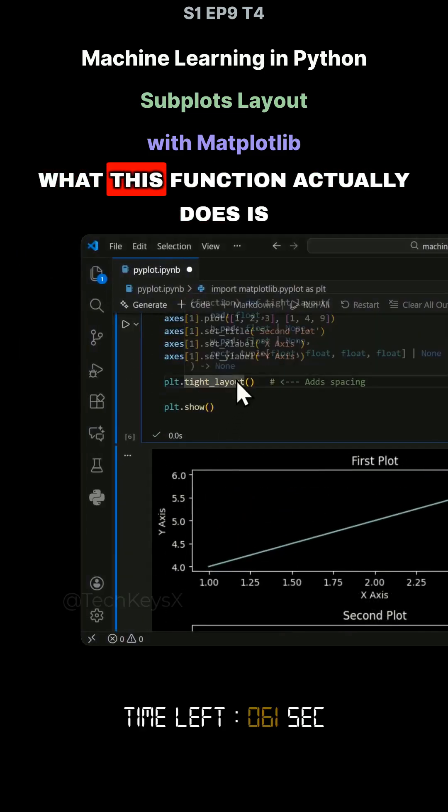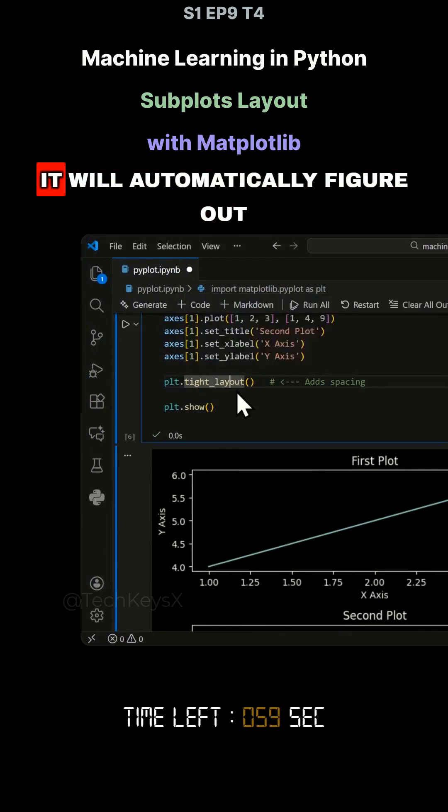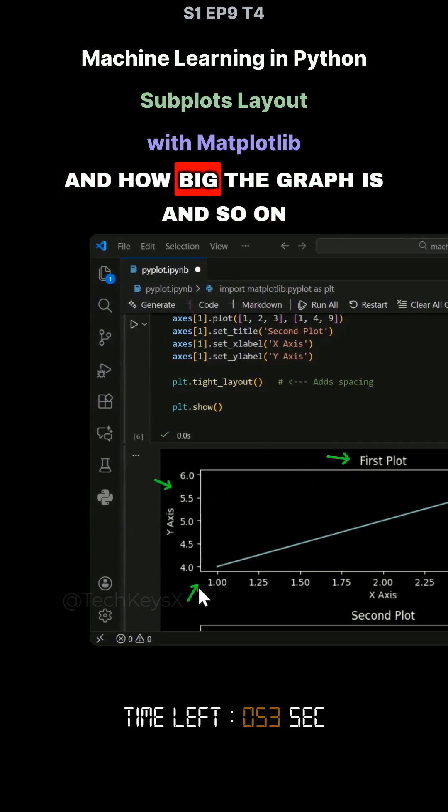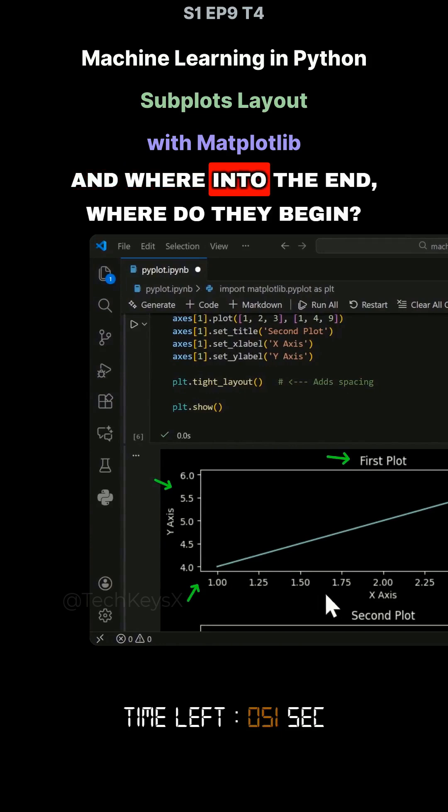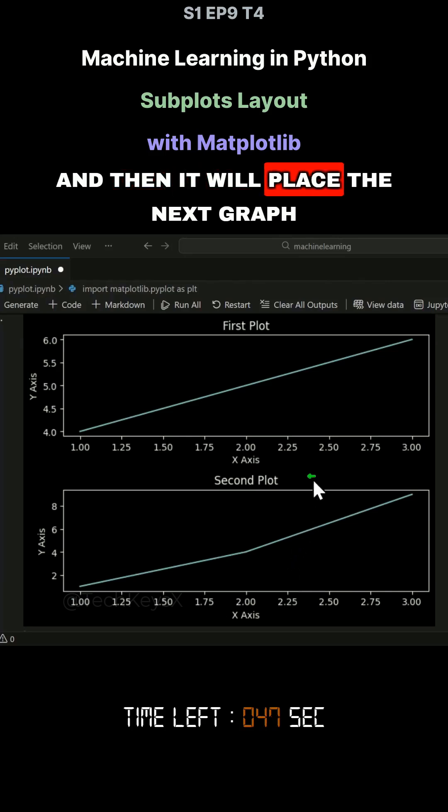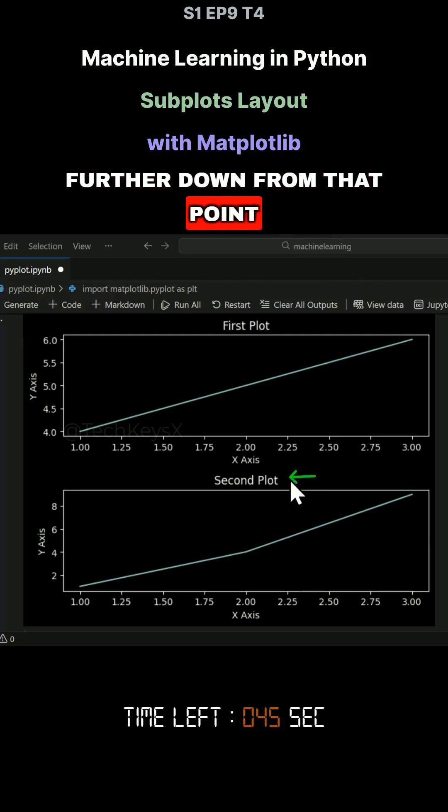So how does this function actually work? What this function does is it will automatically figure out the text size, the graph location, how big the graph is, and where they end and where they begin. It will work all that out.